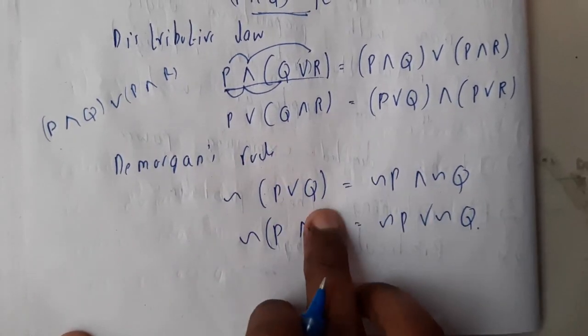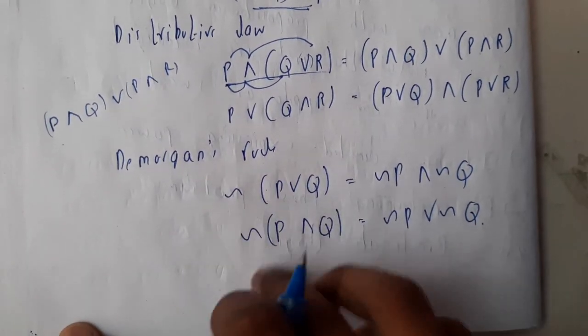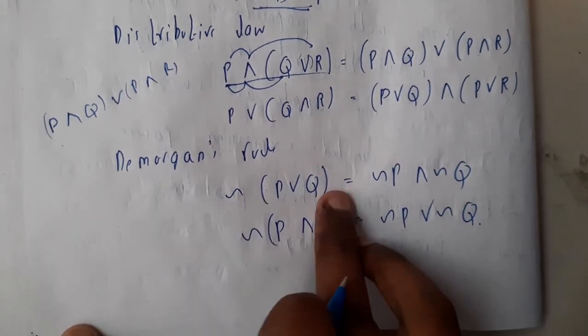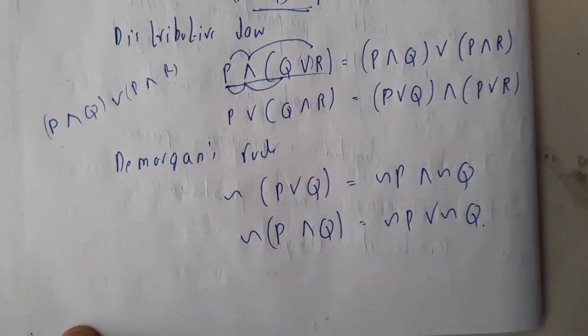So negation will be applied for P, negation will be applied for or, negation will be applied for Q. For P, it becomes negative P, that's nothing but not P and not Q. For or, it becomes and; for and, it becomes or.